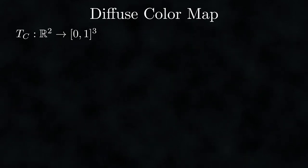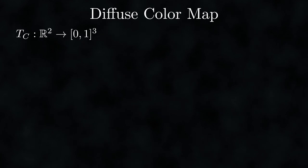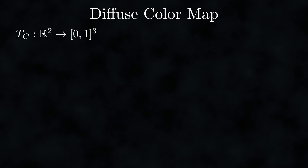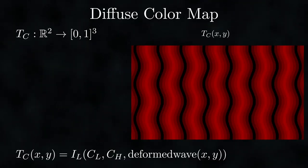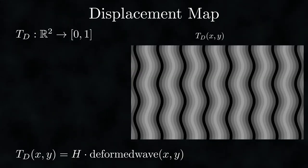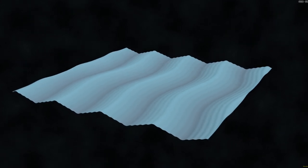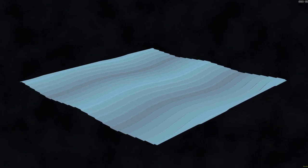Now let's add color and displacement. We create a diffuse color map TC — a function mapping real numbers squared to the closed interval from 0 to 1 cubed. We have two parameters for the color of the lowest and highest wave, plus linear interpolation for colors. Creating the texture is as simple as invoking linear interpolation with those parameters, yielding the color formula. For the displacement map TD — a function mapping real numbers squared to [0, 1] — we define it using parameter H controlling the amount of displacement. By playing with these parameters, we can achieve a wide variety of stunning results using entirely mathematical functions without any pre-made algorithms.